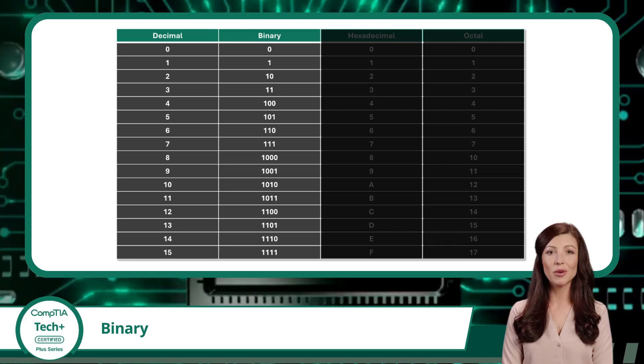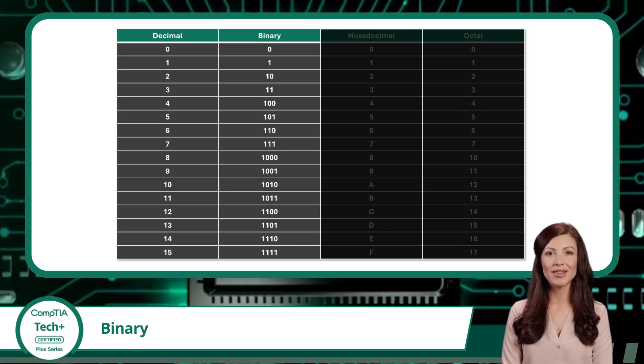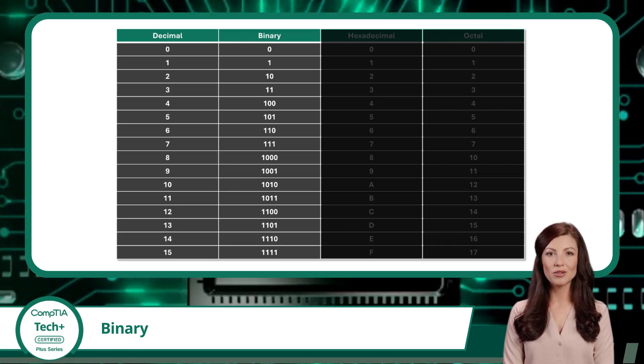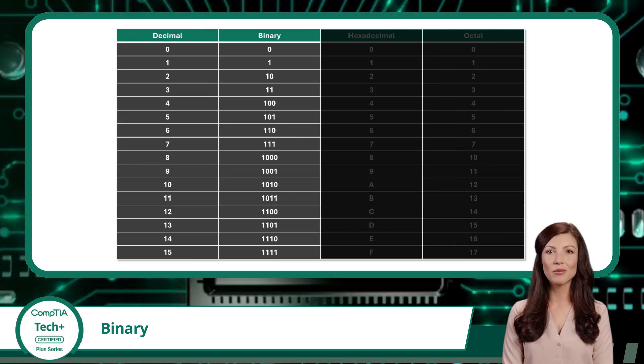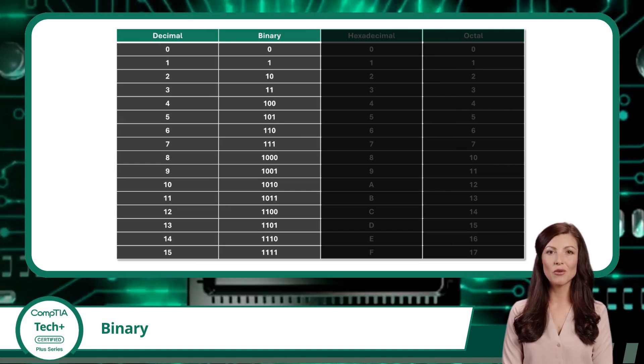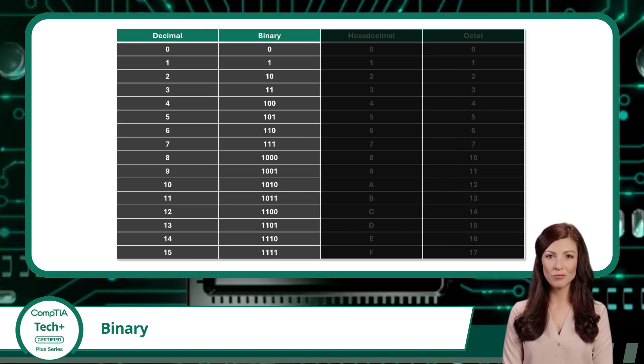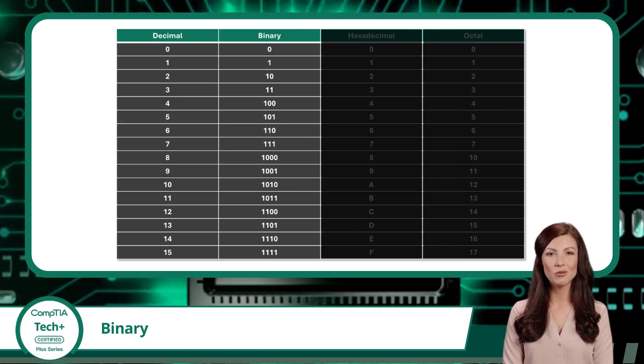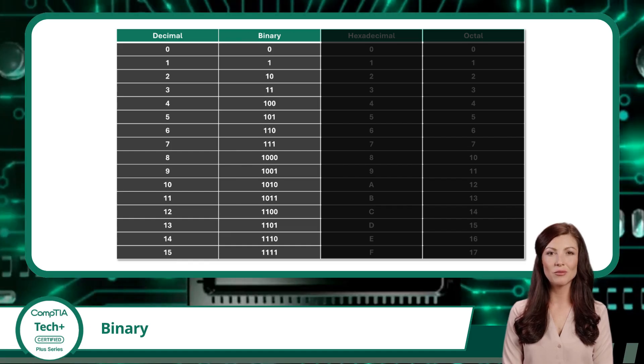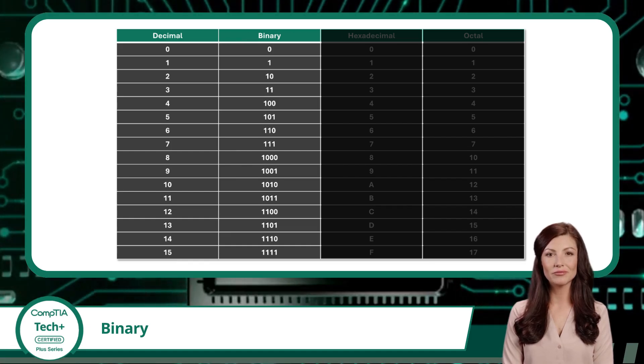Because binary only uses two digits, it usually takes more characters to express the same value compared to decimal. But remember, binary is still the more efficient choice for machines.